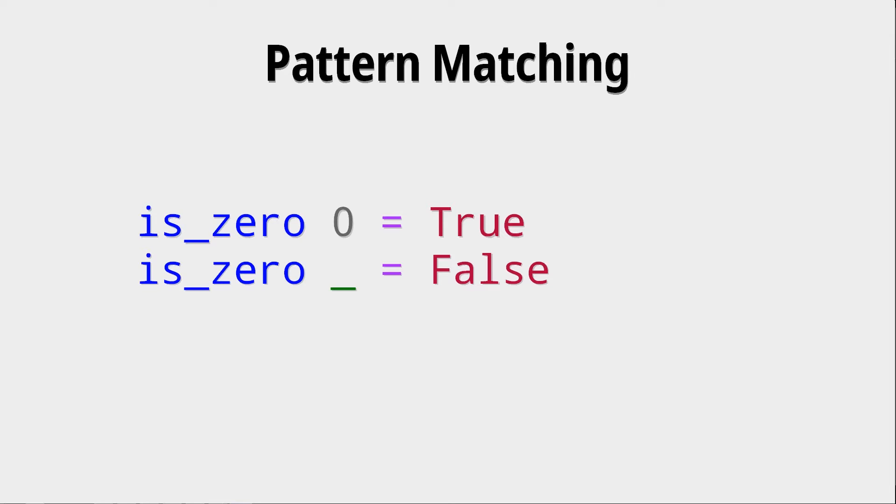Since the pattern of course makes this function partial, since is_zero of 0 only works for the value of 0. So we need this other definition with the wildcard where we can say well if the definition of is_zero for 0 doesn't work, for example because we called is_zero of 1, then this other definition holds.